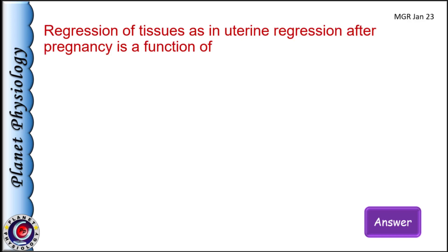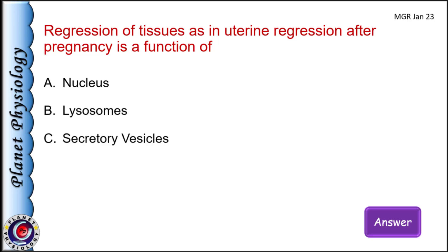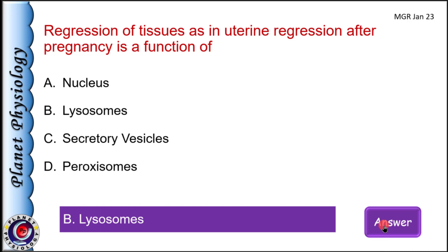Another MCQ from MGR University. Regression of tissues, as in uterine regression after pregnancy, is function of: a) nucleus, b) lysosomes, c) secretory vesicles, and d) peroxisomes. Correct answer is lysosomes. Uterine regression after delivery is brought about by the process called autolysis.